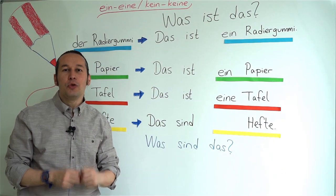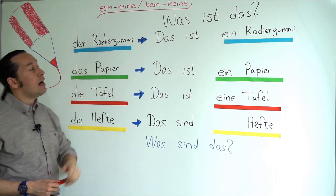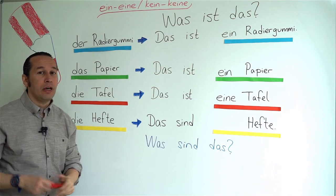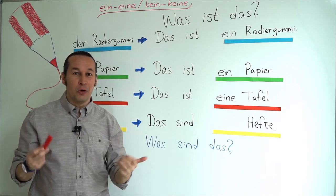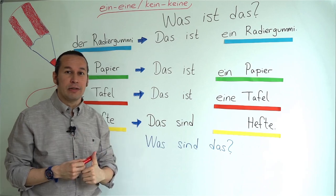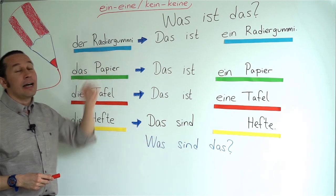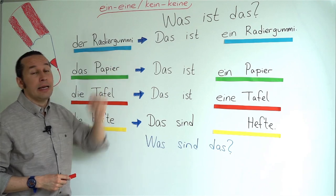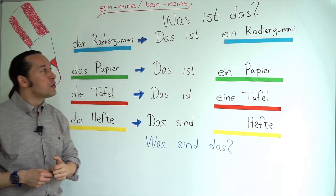Let's continue with the next examples. Here we have der Radiergummi — those who watched the articles video will know this. Der Radiergummi stands for eraser or rubber. So when I ask: Was ist das? — this is an eraser — I say: Das ist ein Radiergummi.